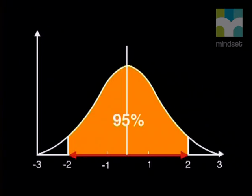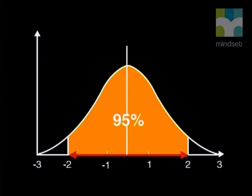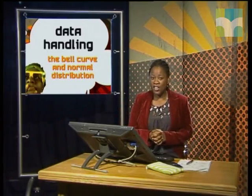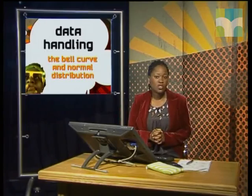This is always the case and is what the standard deviation actually describes. When describing the scores of a survey or test that result in a normal distribution, we can describe the data very effectively with the mean, the skew, and the standard deviation.